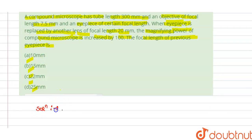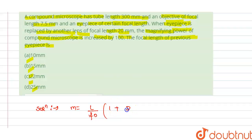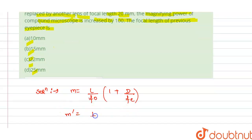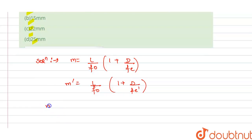The solution: magnification M equals (L / f₀) multiplied by (1 + D / fₑ), where L is the tube length, f₀ is the focal length of the objective, D is the least distance of distinct vision, and fₑ is the focal length of the eyepiece. Similarly, M' equals (L / f₀) multiplied by (1 + D / fₑ').